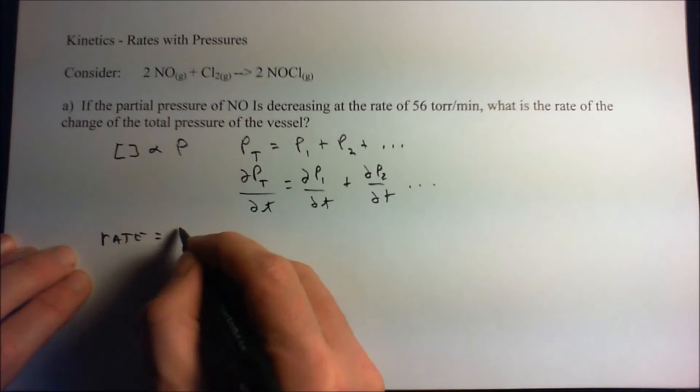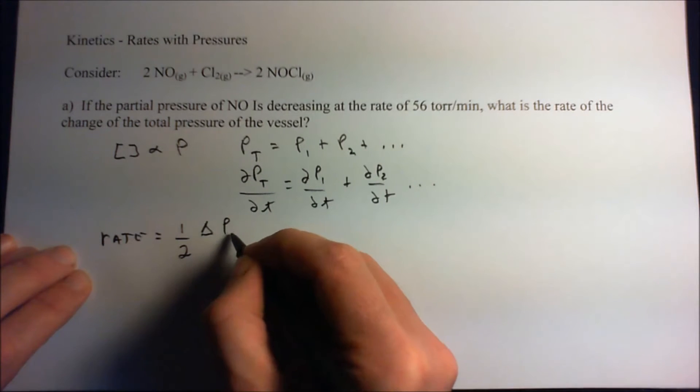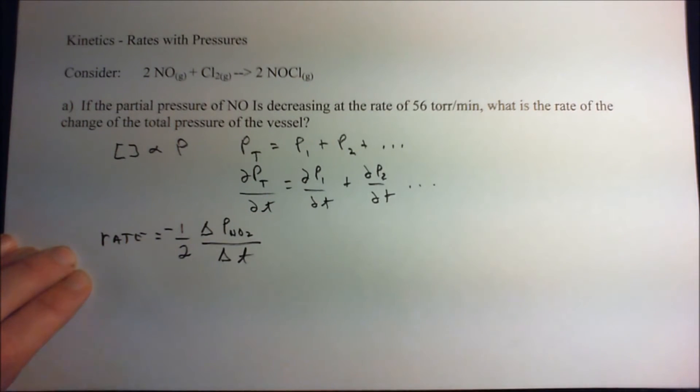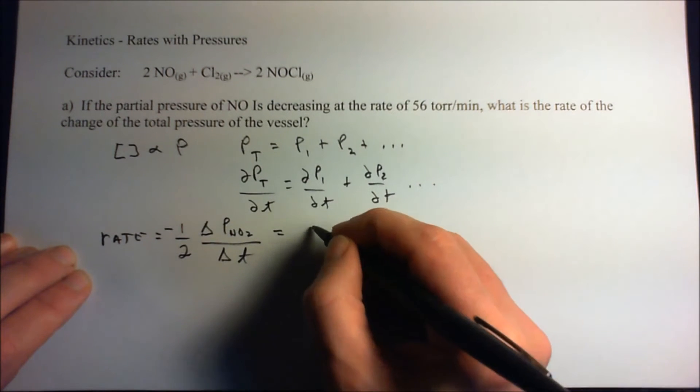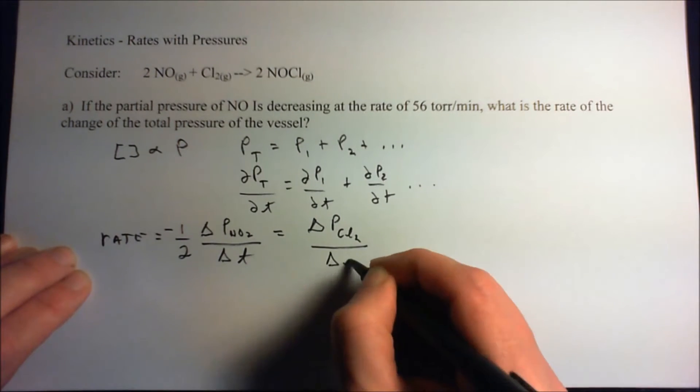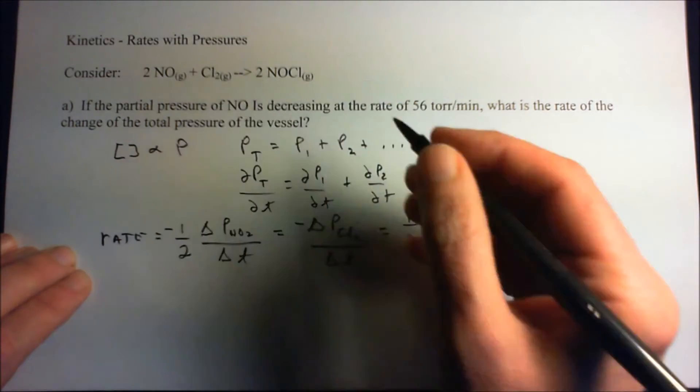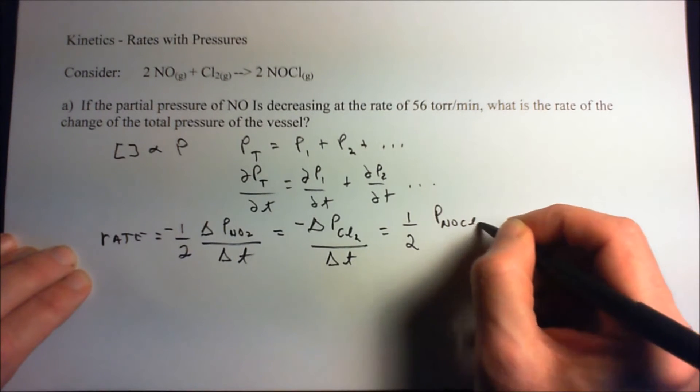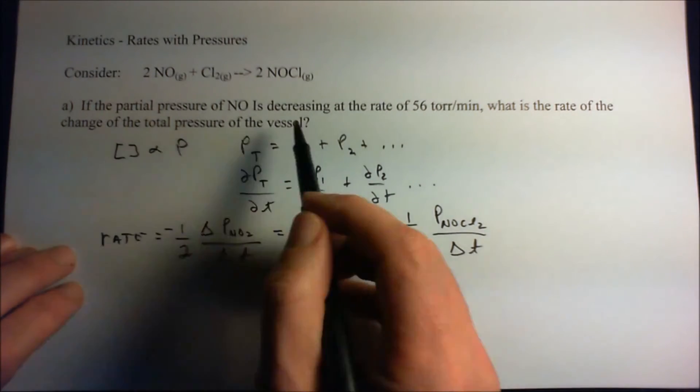These rates are related this way: the rate is one-half—take the reciprocal of whatever coefficient is in front—the change in pressure for NO with respect to time. Remember that's negative because it's decreasing. That's equal to the change in partial pressure of chlorine with respect to time, and then finally we have plus one-half the pressure of NOCl₂ with respect to time because we're increasing.